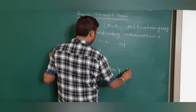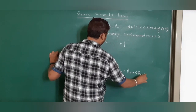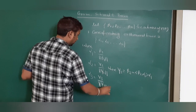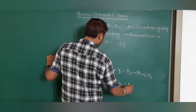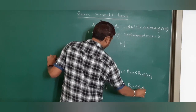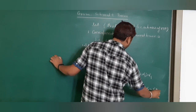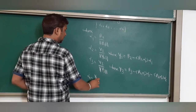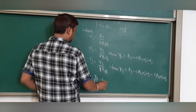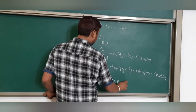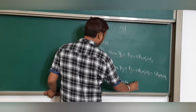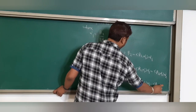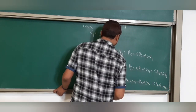Gamma 2 is calculated by subtracting projections. For alpha n, it is gamma n upon norm of gamma n, where gamma n equals beta n minus the inner product of beta n with alpha 1, times alpha 1, minus the inner product of beta n with alpha 2, times alpha 2, and continuing down to minus the inner product of beta n with alpha n-1, times alpha n-1. This is the general formula.